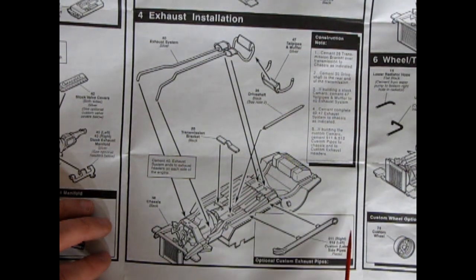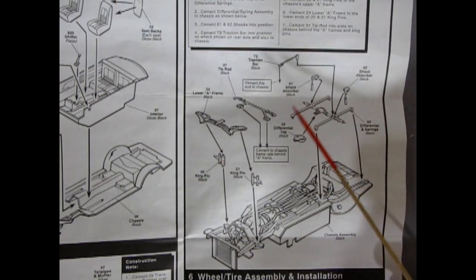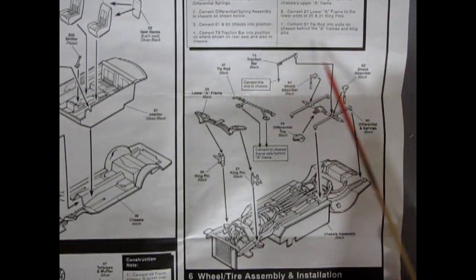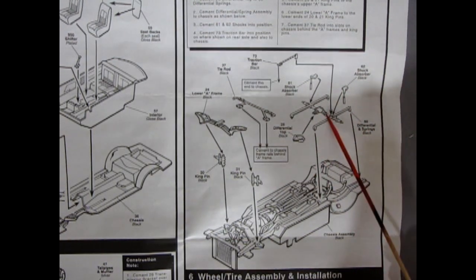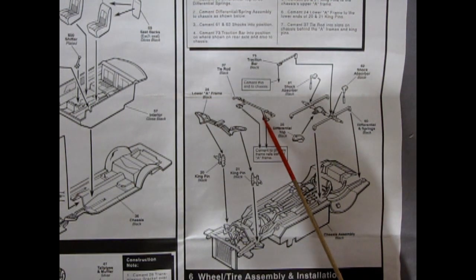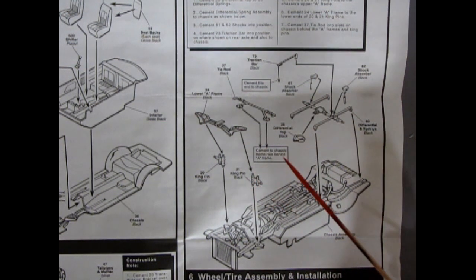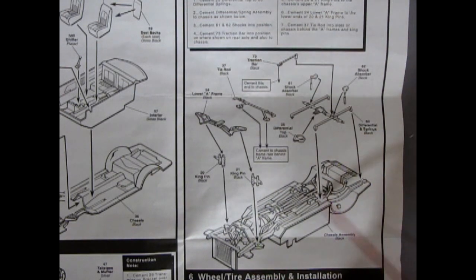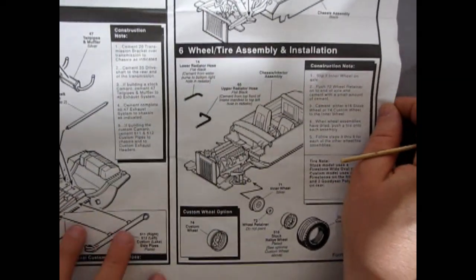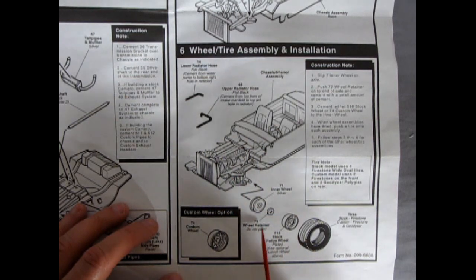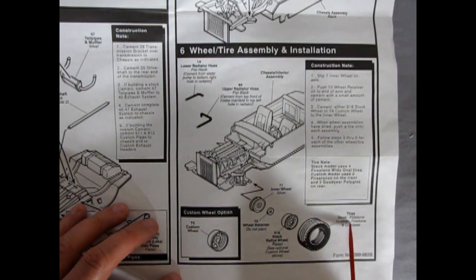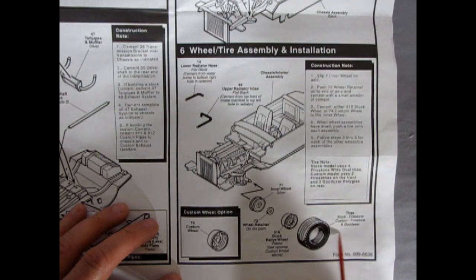The transmission bracket going in here, our drive shaft connecting your engine together. And then you've got your optional lake pipes sitting on there. And then we go into our front suspension assembly, front and rear. So we've got traction bars going on to the back, shock absorbers, differential top. Then our tie rods, lower A-frames, the spindles as well as the springs in here. And then going into our upper A-arms which are part of the chassis and frame assembly. Then of course down here, we have the radiator hoses going in and then our wheels going on with our wheel retainer. Then we pop on our stock rally wheels and the tires. And it says stock are the Firestones, customs are Firestone with a mix of Goodyears.